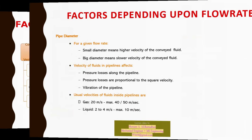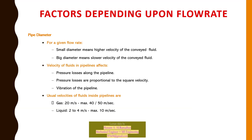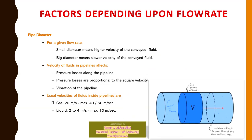For a given flow rate, a small diameter pipe means higher velocity, and a large diameter means lower velocity of the conveyed fluid. Velocity of fluid in a pipeline affects pressure loss along the pipeline; pressure losses are proportional to the square of velocity. Usual velocity of fluid: for gases, 20 m/s with a maximum of 40–50 m/s; for liquids, 2–4 m/s with a maximum of 10 m/s.